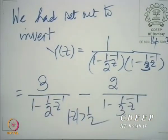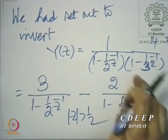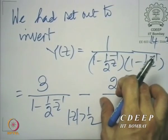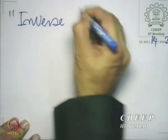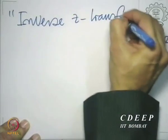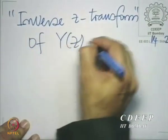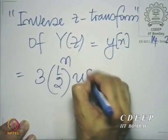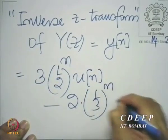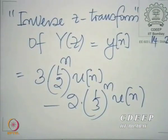This is a sum of two Z-transforms. Taking this term when mod z is greater than half, 3 by (1 minus half z-inverse), from the linearity of the Z-transform, must correspond to the sequence 3 times (half)ⁿ u(n). And since mod z is greater than half, mod z is of course greater than one-third. So the inverse Z-transform of Y(z), which is y(n), is 3 times (half)ⁿ u(n) minus 2 times (one-third)ⁿ u(n), from the linearity of the Z-transform.